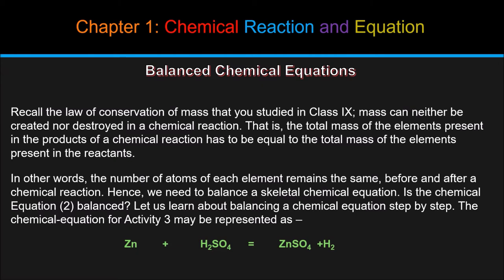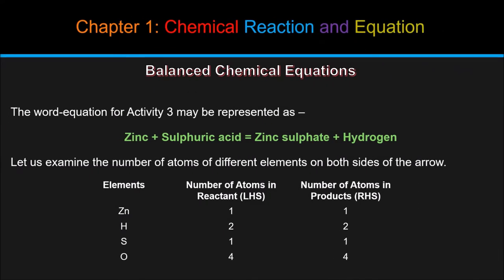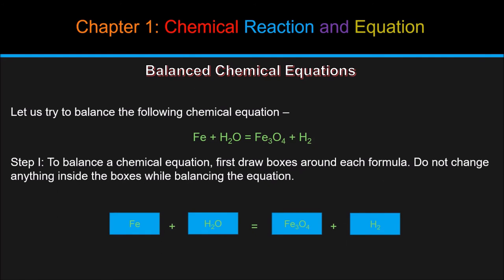The chemical equation for activity 3 may be represented as Zn plus H2SO4 equals ZnSO4 plus H2. The word equation for activity 3 may be represented as zinc plus sulfuric acid equals zinc sulfate plus hydrogen. Let us examine the number of atoms of different elements on both sides of the arrow. Zn, that is zinc, has 1 reactant and 1 product. H, that is hydrogen, has 2 reactant and 2 products. S, that is sulfur, has 1 reactant and 1 product. O, that is oxygen, has 4 reactants and 4 products.